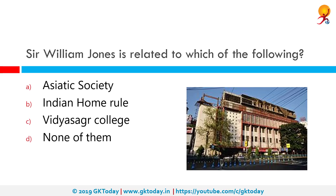Sir William Jones is related to which of the following? The correct answer is the Asiatic Society. The Asiatic Society was founded by Sir William Jones on January 15, 1784, in a meeting presided over by Sir Robert Chambers, the Chief Justice of the Supreme Court at Fort William in Calcutta, then the capital of British Raj, to enhance and further the cause of oriental research.